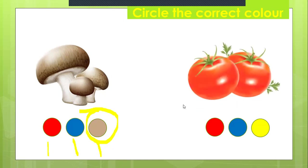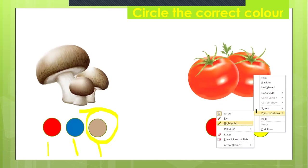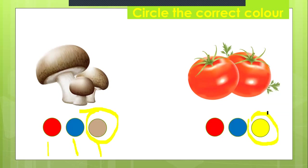Next one. Do you know the name of these vegetables? They are called tomatoes. Tomatoes are in red. How many tomatoes are there? There are two — one, two. There are two tomatoes. What is the color of the tomatoes — red, blue, or yellow? They are in red, so we have to circle the red one. Which one is the red? Is it this one?